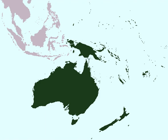There are also Creoles formed from the interaction of Malay or the colonial languages with indigenous languages, such as Tok Pisin, Bislama, Pijin, various Malay trade and Creole languages, Hawaiian Pidgin, Norfolk, and Pitcairn.